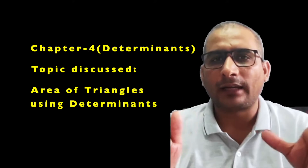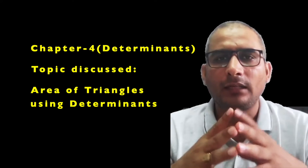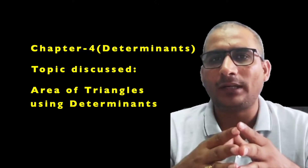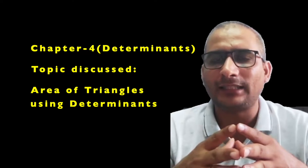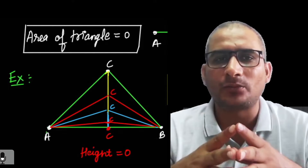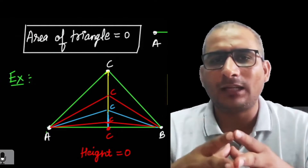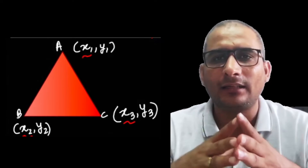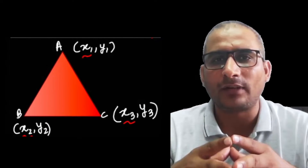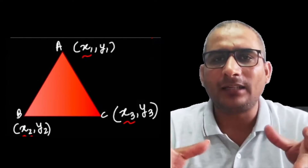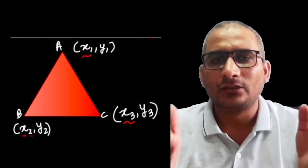Today we are going to discuss the area of triangle — how to find out the area of a triangle. We know various formulas: half into base into height, Heron's formula root s(s-a)(s-b)(s-c), and for an equilateral triangle root 3 by 4 a squared. In class 10, if we know all three vertices of a triangle, we have a formula for that as well.